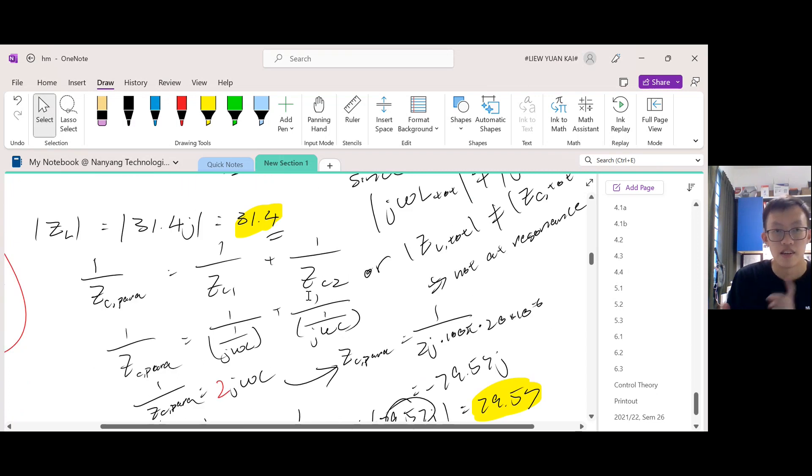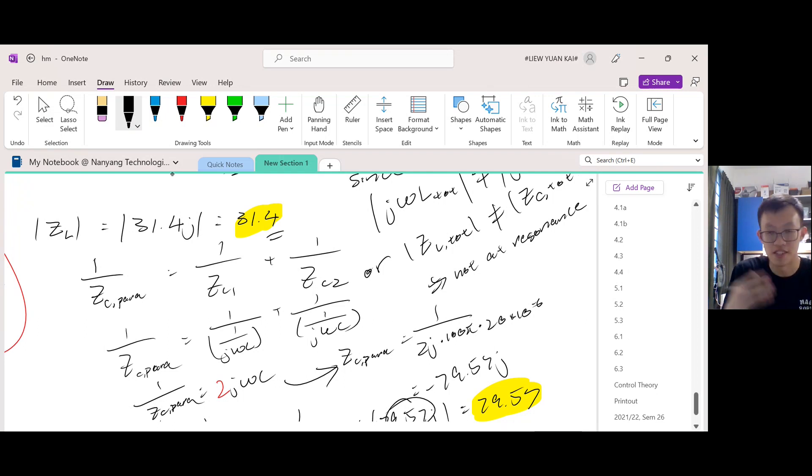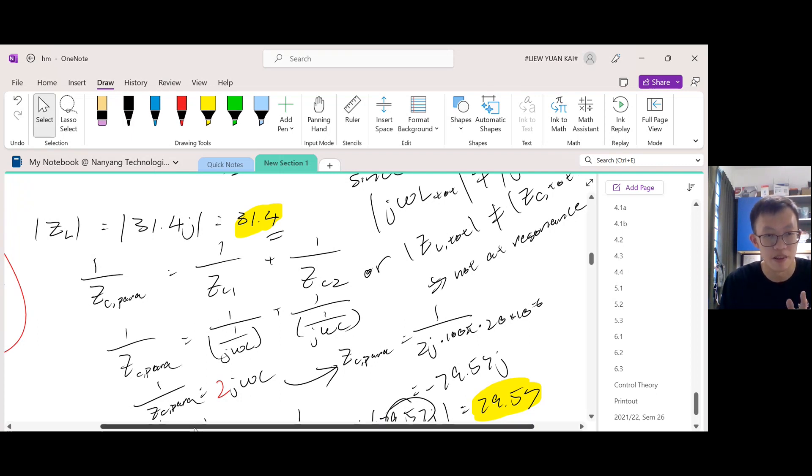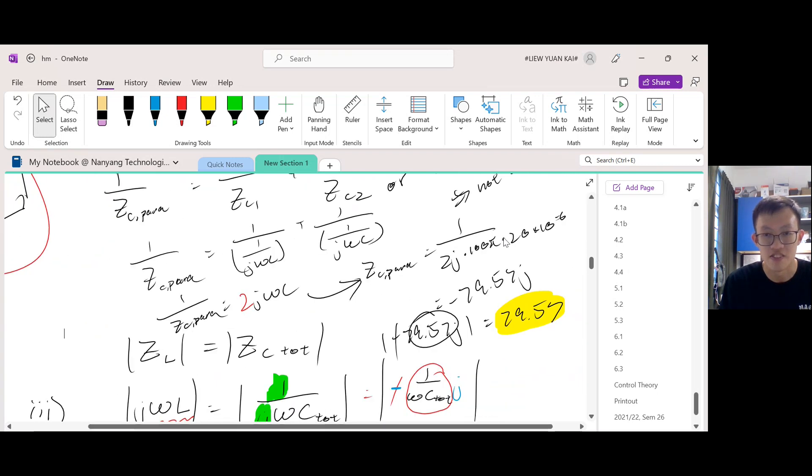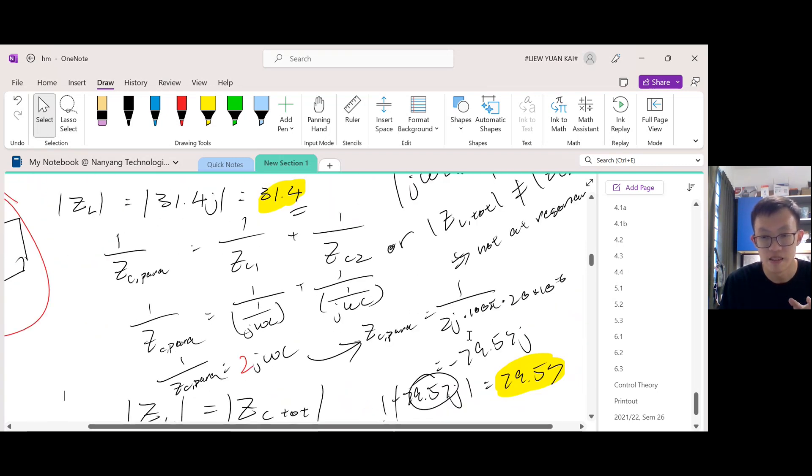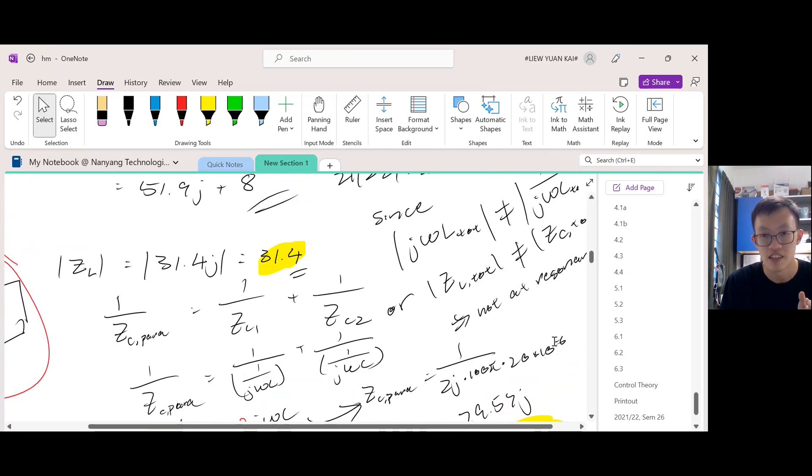Again, I'm going to recap. The mistake that I made in the previous video was that I just took Z_C1 plus Z_C2 and added them together. But this only applies in the series configuration. Now they are in parallel, so I had to use the impedance in parallel formula. Find the total impedance for the capacitors, only then take the magnitude and check if they match.